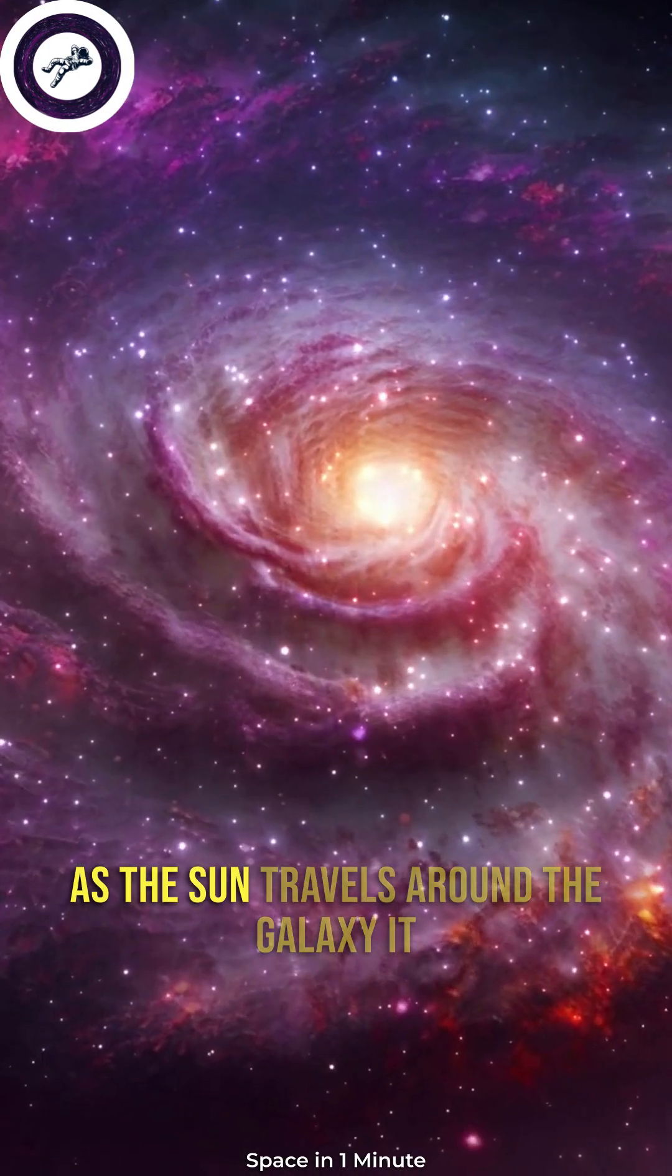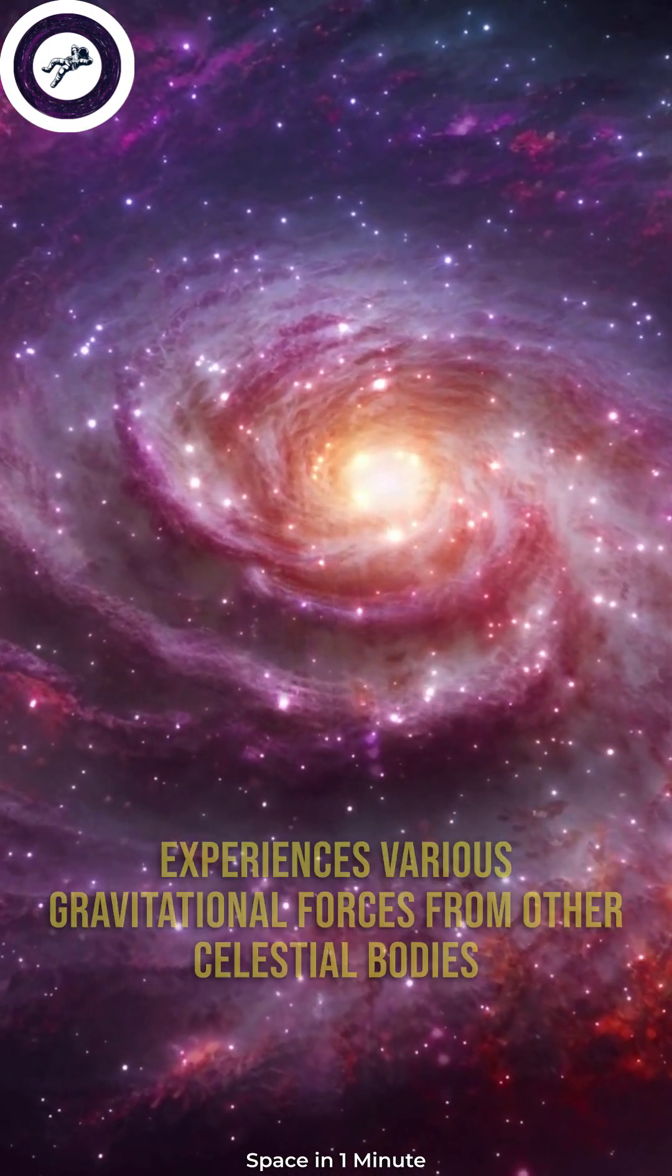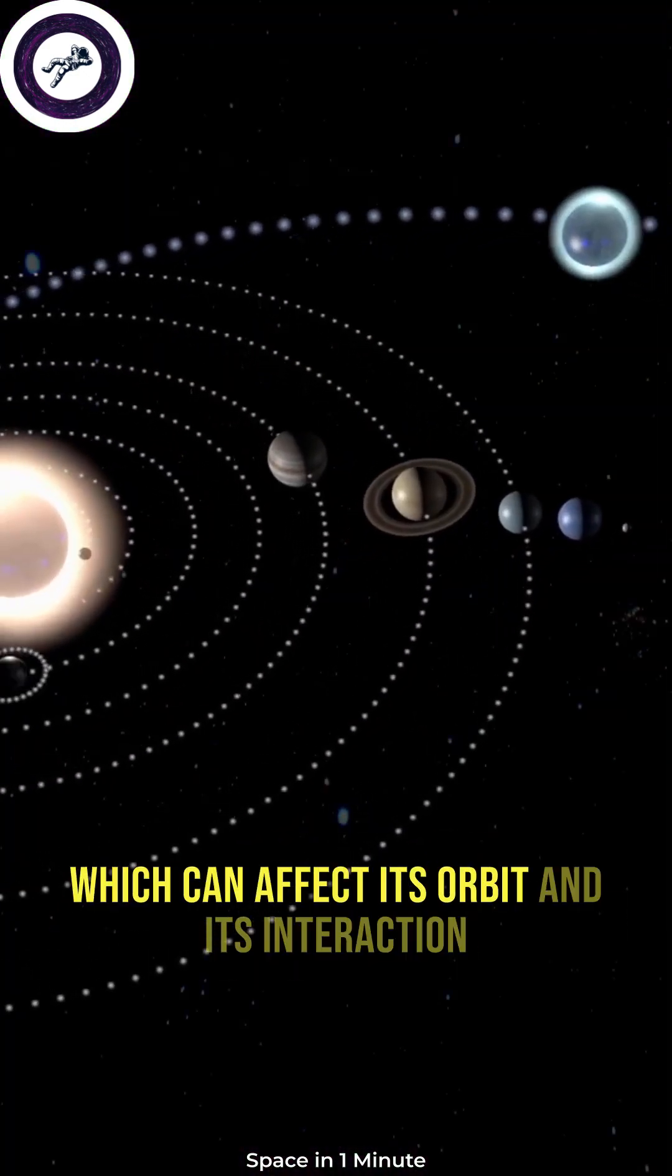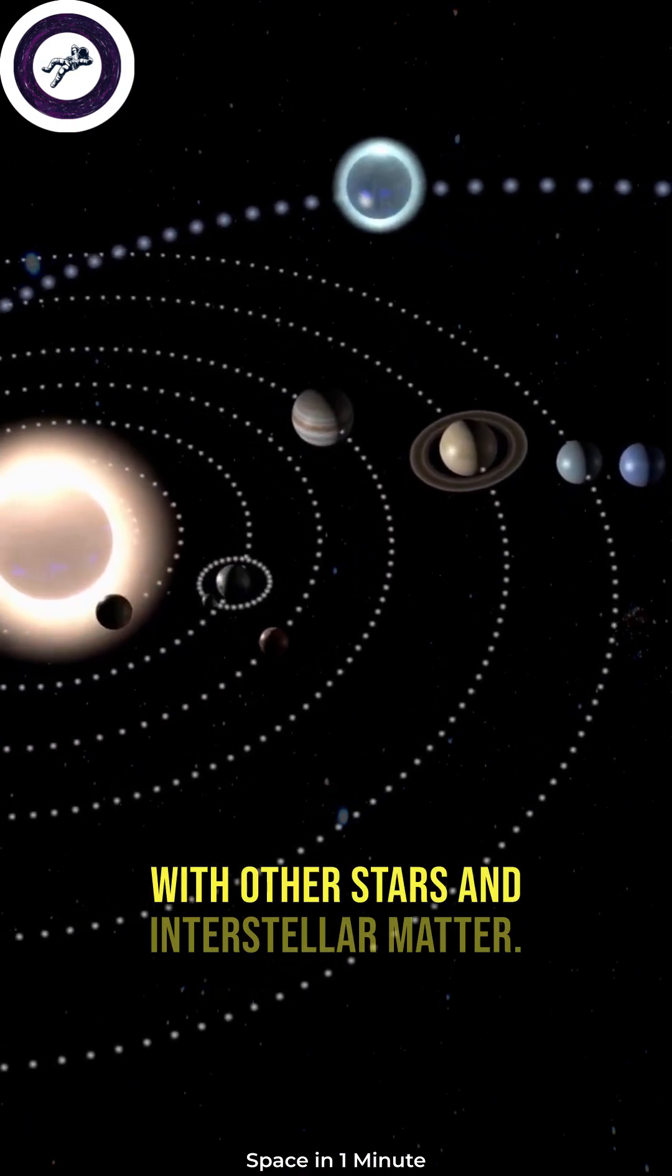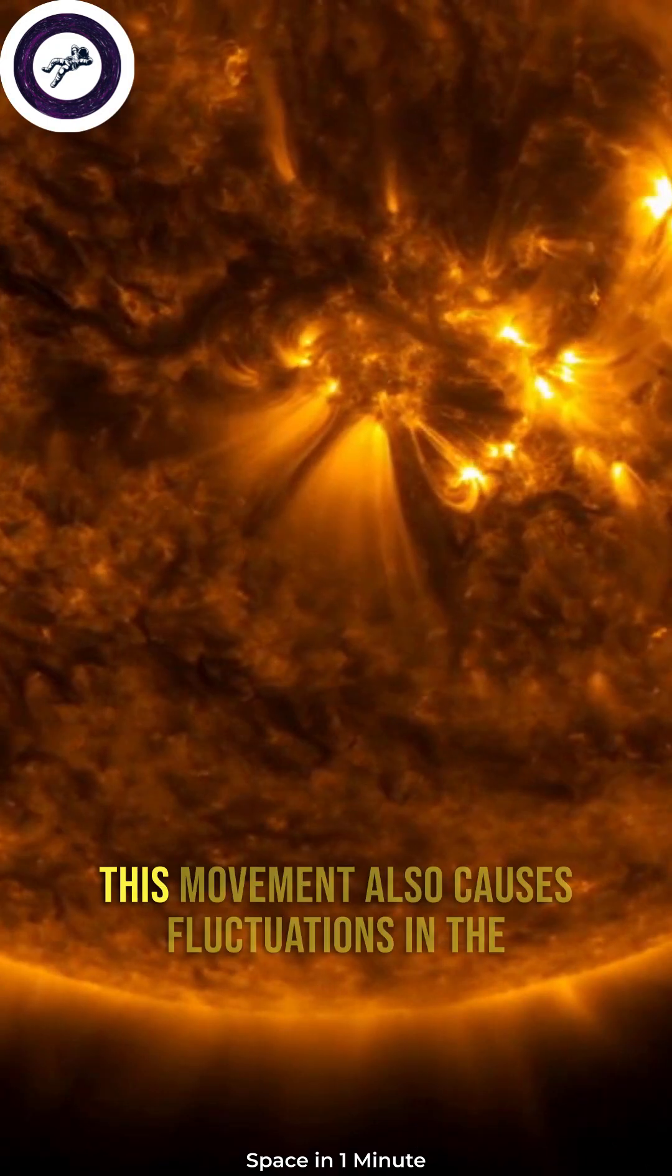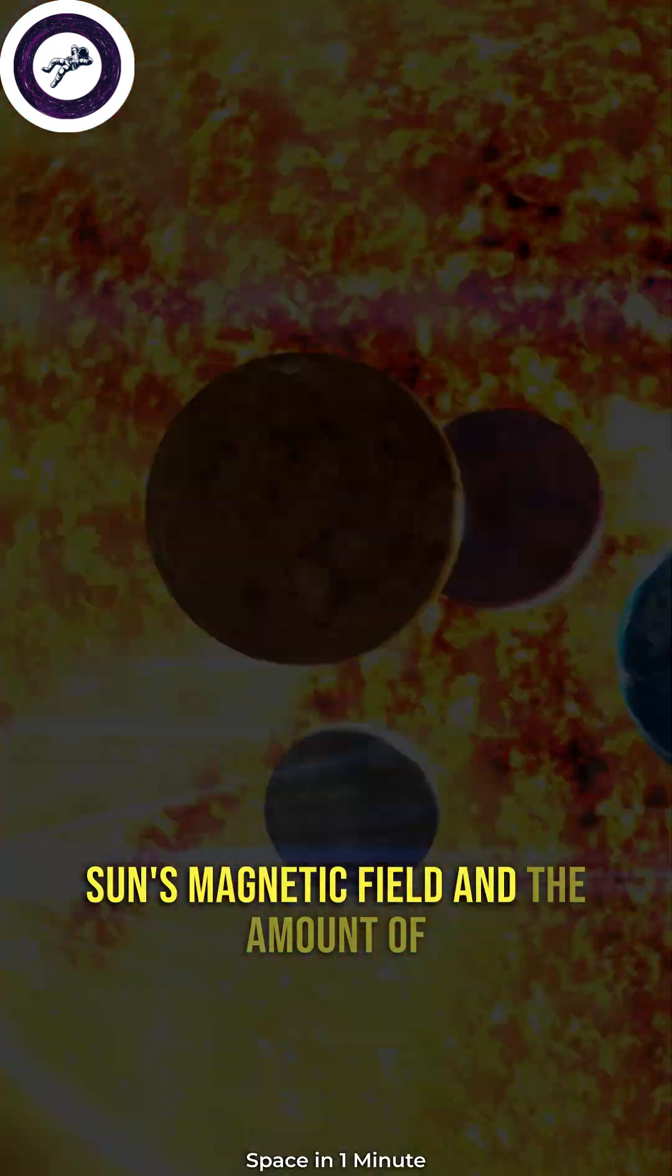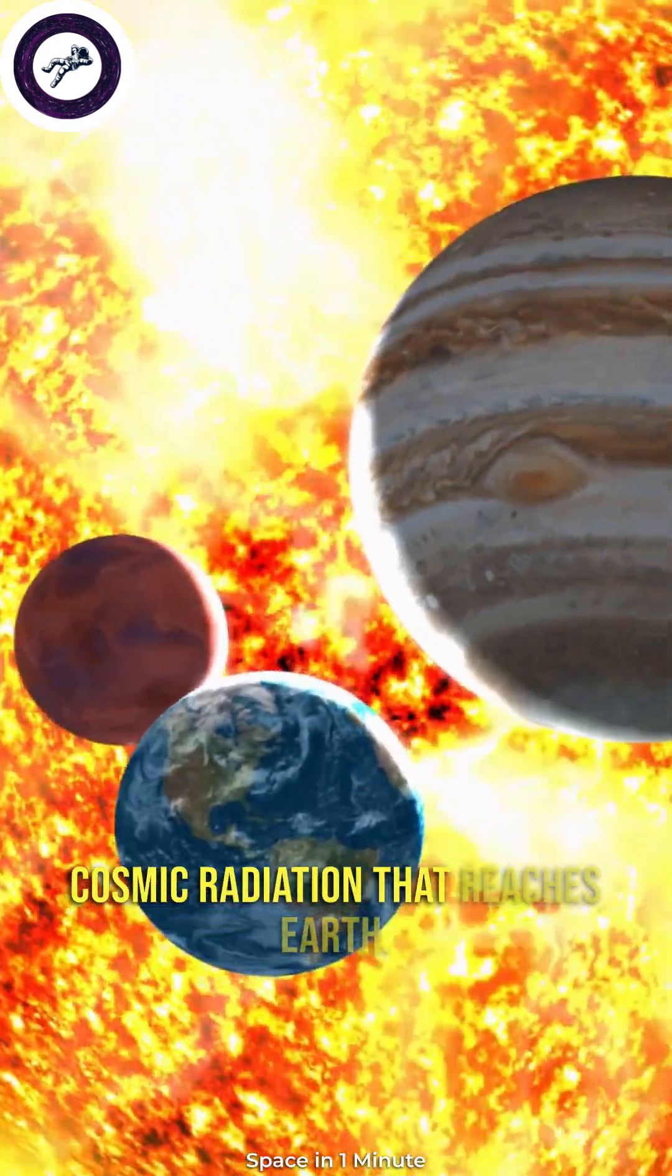As the sun travels around the galaxy, it experiences various gravitational forces from other celestial bodies, which can affect its orbit and its interaction with other stars and interstellar matter. This movement also causes fluctuations in the sun's magnetic field and the amount of cosmic radiation that reaches earth.